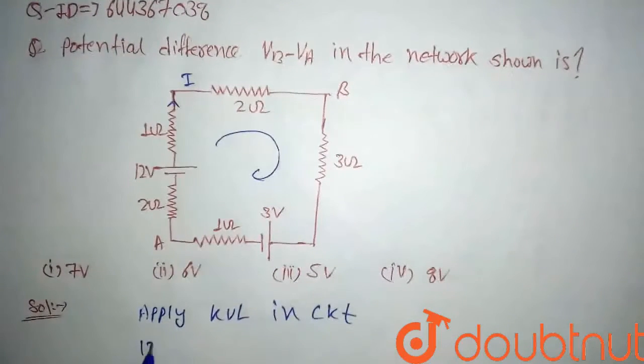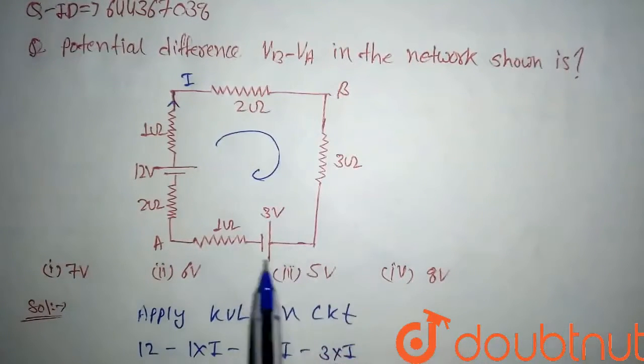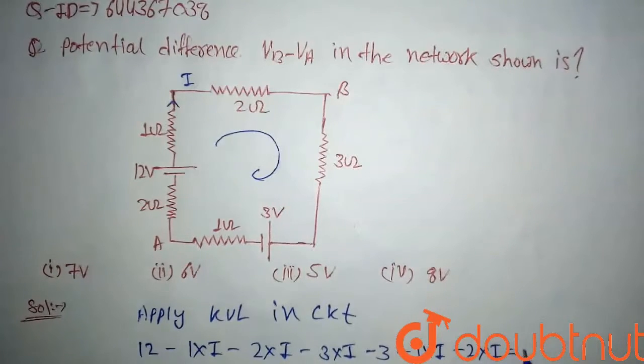So here write 12 minus 1 into I minus 2 into I minus 3 into I. Opposite polarity, so I will write minus 3 volts here. Again minus 1 into I minus 2 into I equal to 0.